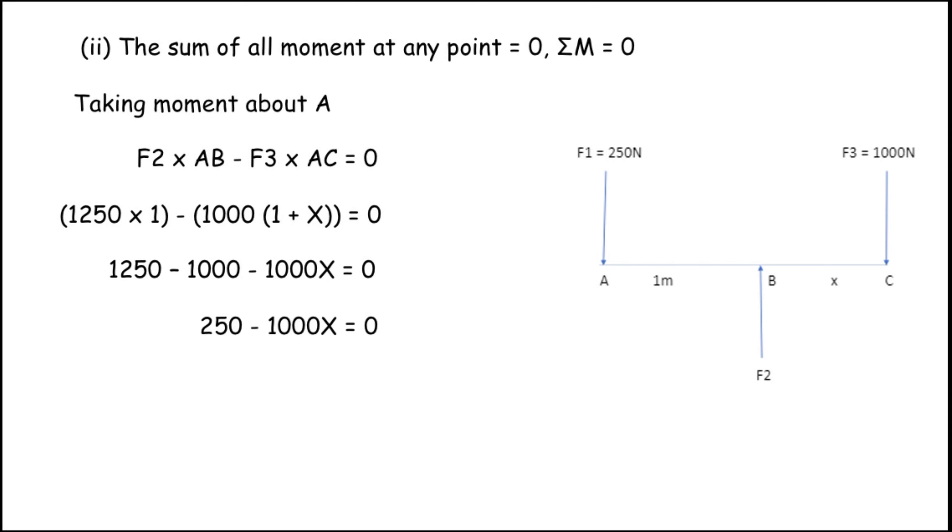I am now transferring the 250 from left to right. It becomes negative. So, minus 1000X equals minus 250. And now transferring the minus 1000 to the right, it becomes divided. So, X equals minus 250 divided by minus 1000. The symbol minus is cancelled on both sides. And X equals 0.25 meter. We found the distance between F2 and F3.